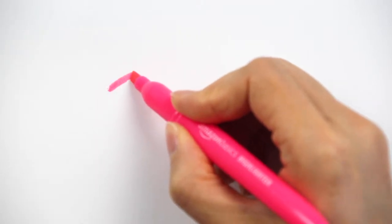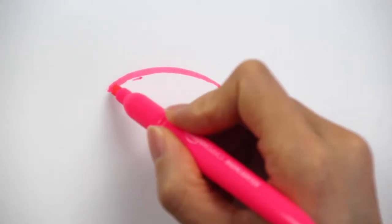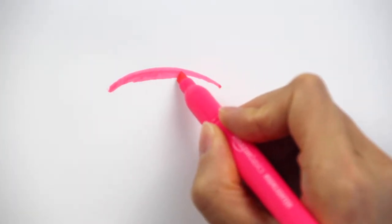First let's start with a curve, so right here we draw a little curve like this, and I'm going to make the middle part a little thicker.